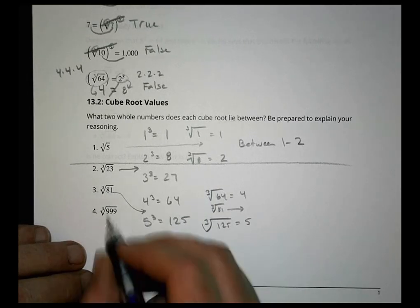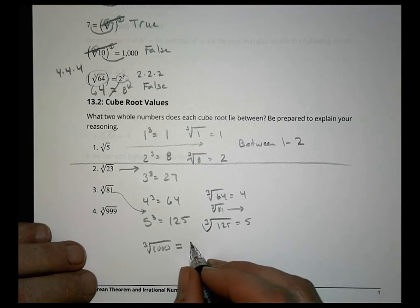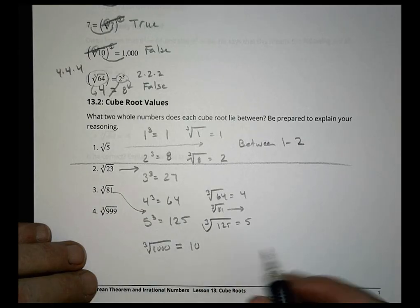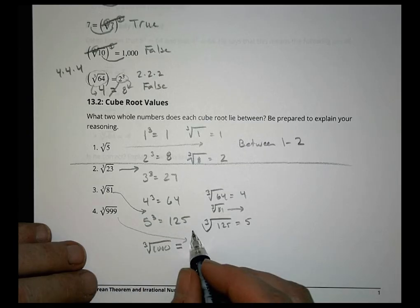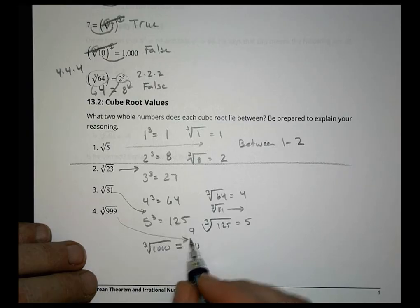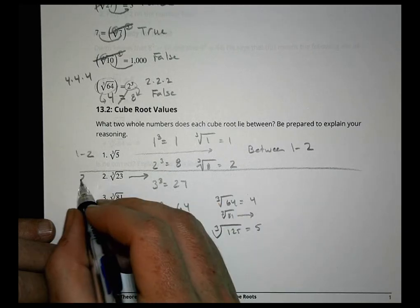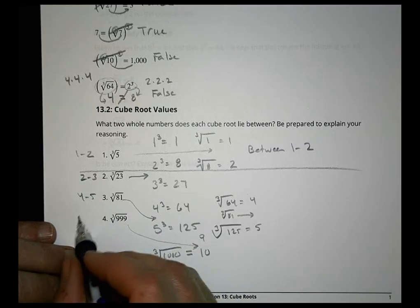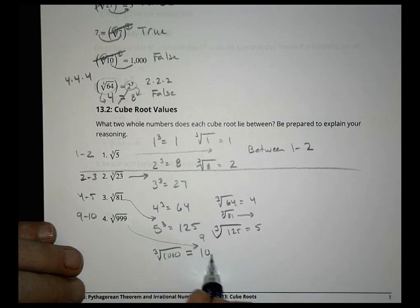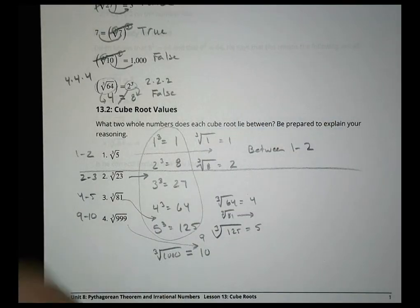Finally, the cube root of 1,000 is actually equal to 10, because 10 times 10 times 10 is 1,000. So for the cube root of 999, it would be a little less than 10 — between 9 and 10. So to summarize: the first lies between 1 and 2, the second between 2 and 3, the third between 4 and 5, and the last between 9 and 10. You want to take the values you're familiar with and use those to make predictions about where things are going to be.